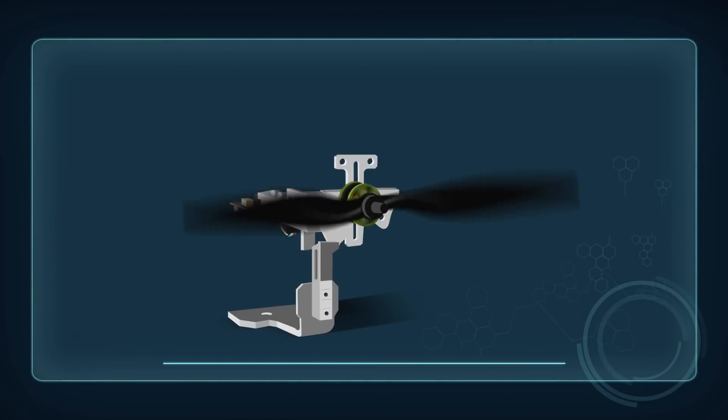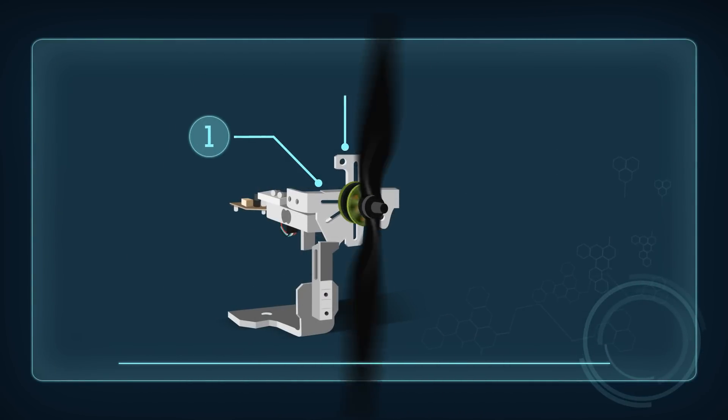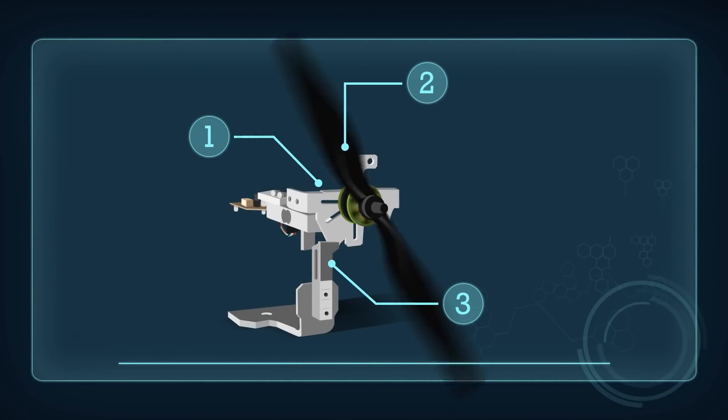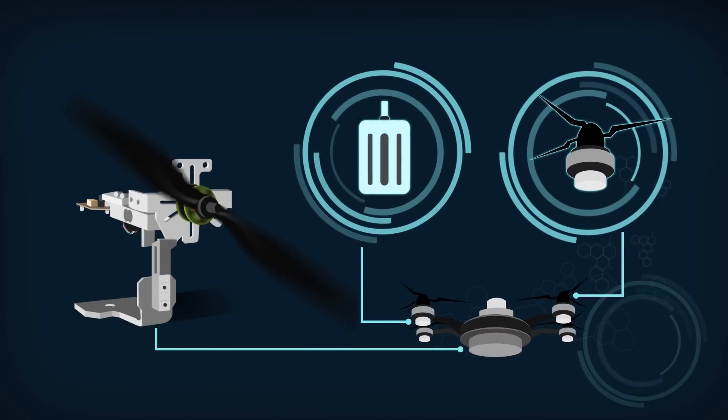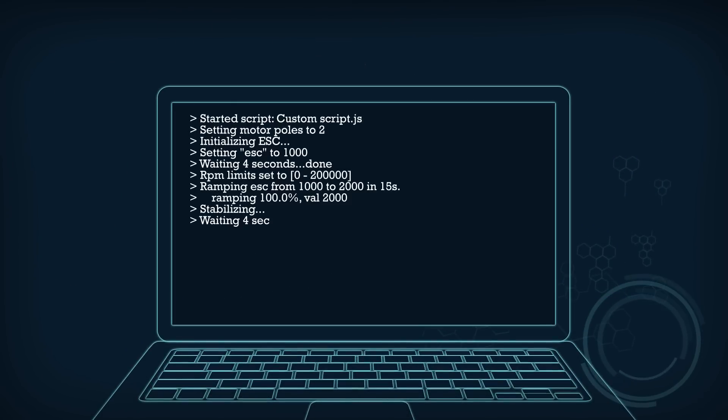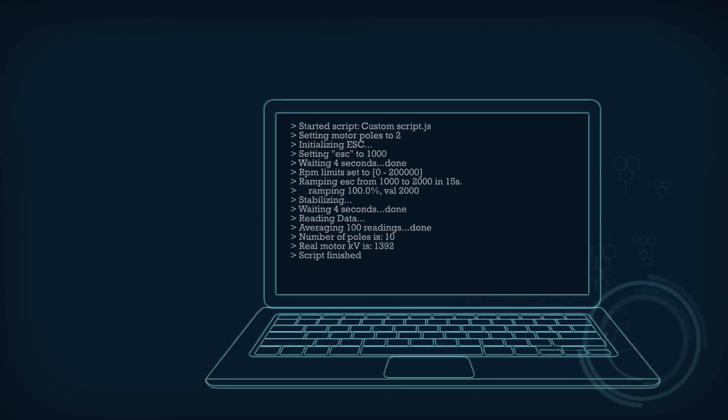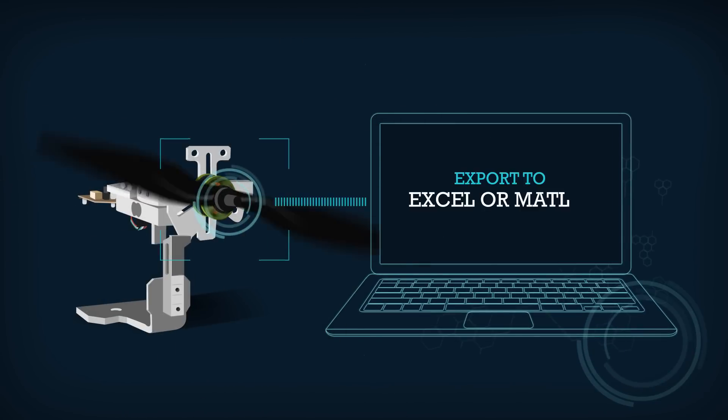These three features set the RC Benchmark apart from other dynamometers and will greatly improve your design workflow. It directly measures the efficiency of the motor and propeller, has automatic testing and powerful scripting abilities, and exports data easily to Excel or MATLAB.